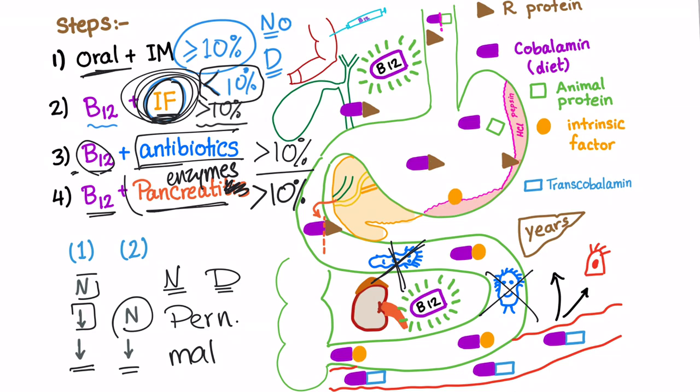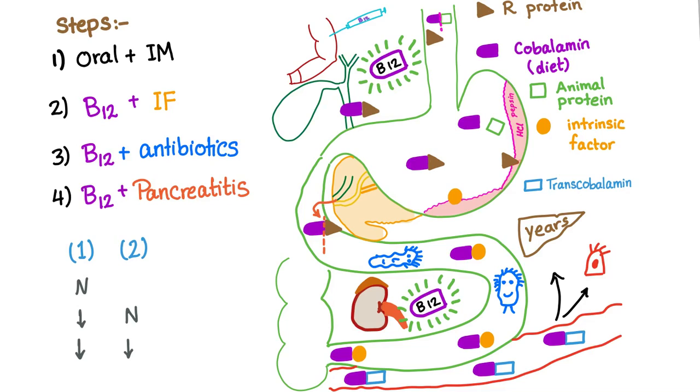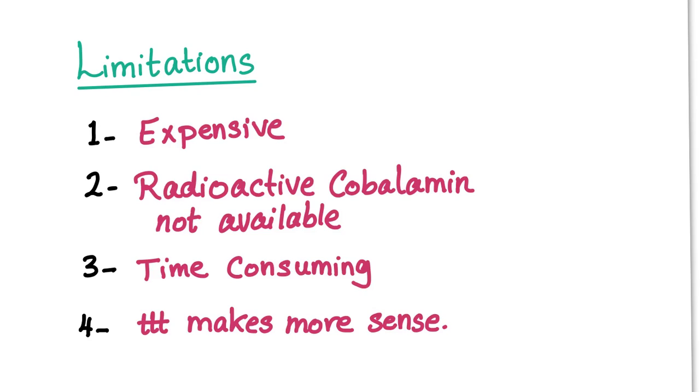Could be bugs, could be pancreatic enzyme deficiency, could be ileal resection, Crohn's disease, fish tapeworm. So this test kind of had some limitations, but pernicious anemia easily diagnosed with this test. Also, bacterial overgrowth will be diagnosed just like that. So this was the Schilling test.